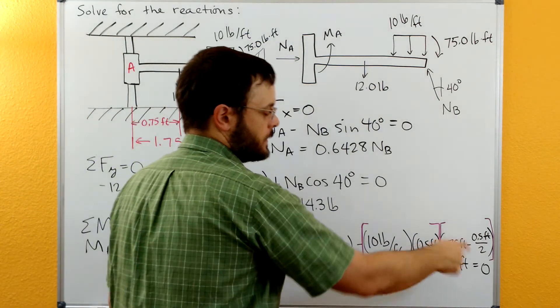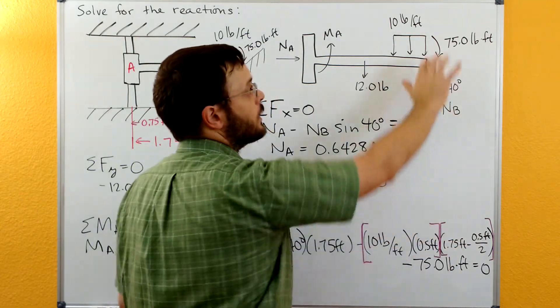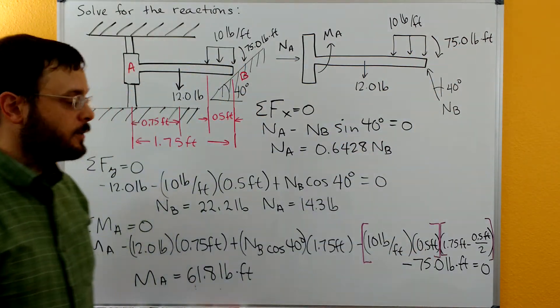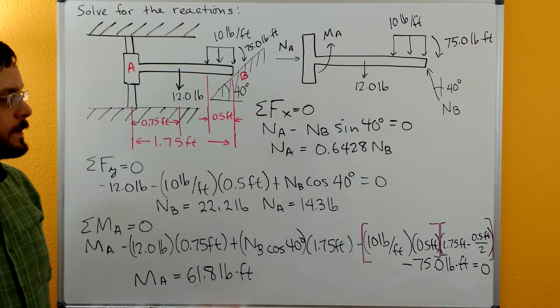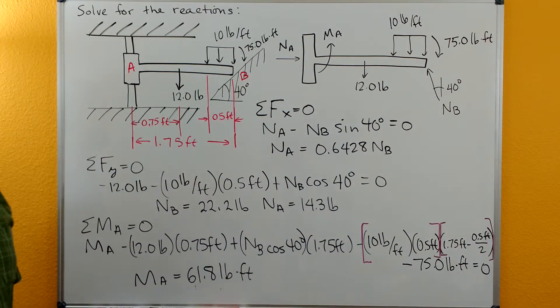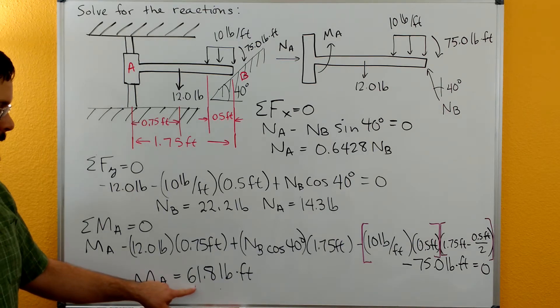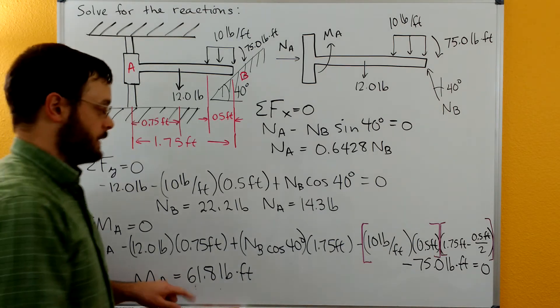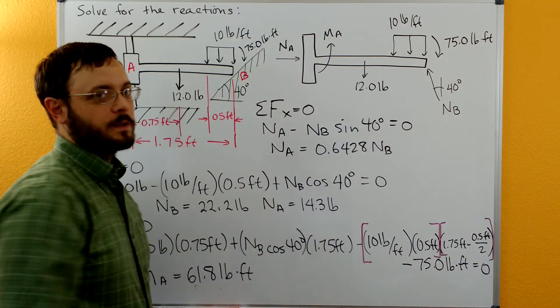And then we have, this is just continuing this line down, we have a negative 75 pound-foot clockwise moment. That's equal to zero. And that allows us to solve for our M_A, and it's 61.8 pound-foot. It's positive, so that means that it is clockwise.